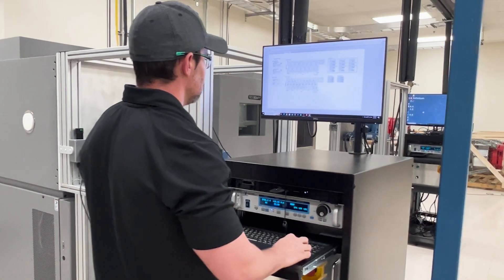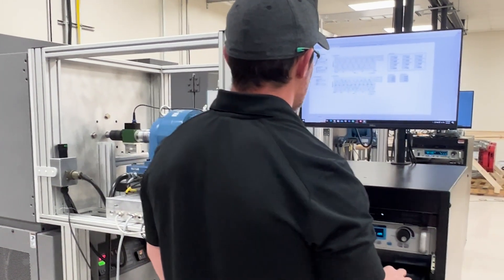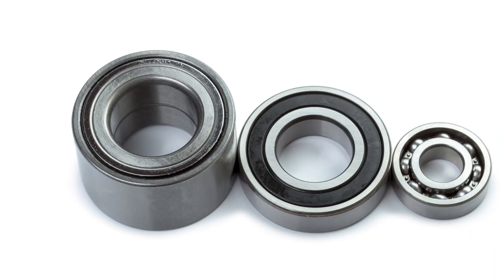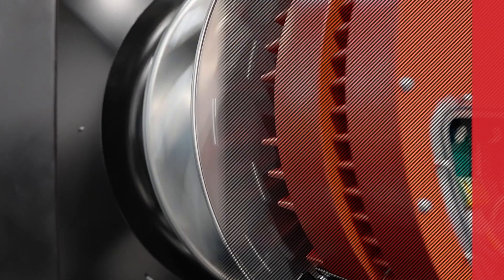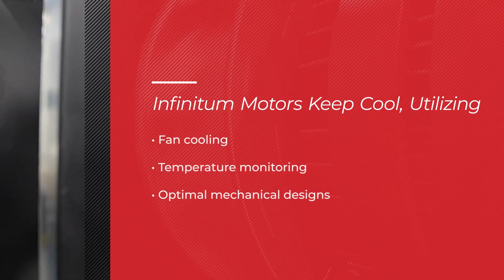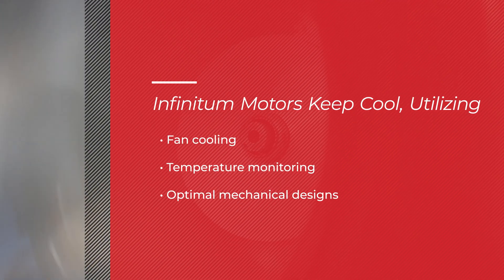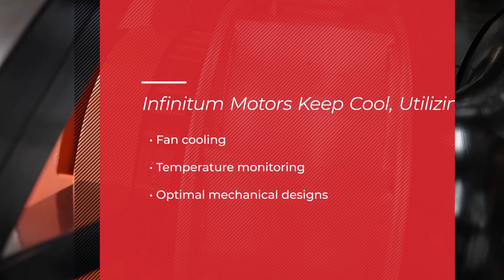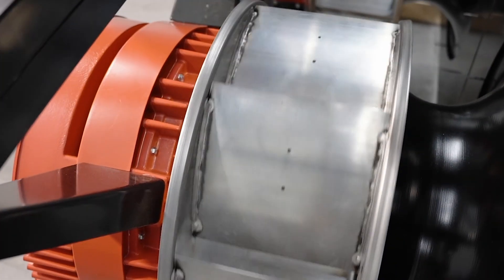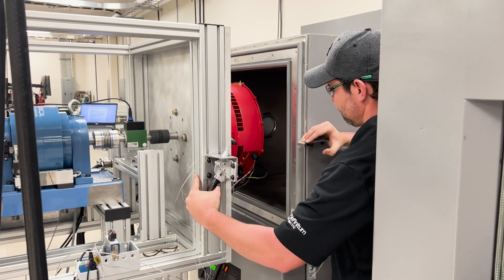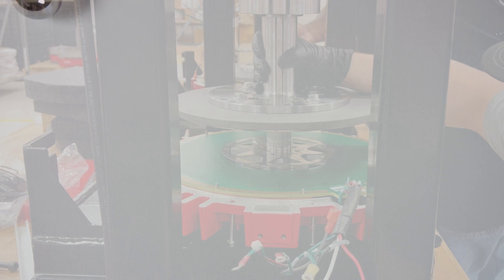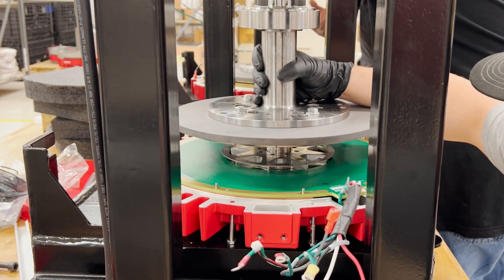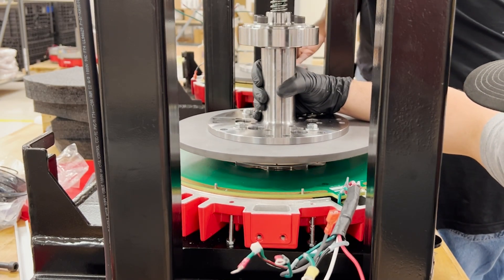Infinitum goes beyond to take preventive measures to mitigate bearing failure throughout the design process. Infinitum uses steel bearings and steel races on all of our motors. Infinitum motors are kept cool through fan cooling, continuously monitoring motor thermals to prevent over-temperature conditions, and optimal mechanical designs to pull heat out of the motor. We design and select our motor bearings with success in mind, using a hybrid 6200 series steel bearing or equivalent. We utilize grounding rings and shaft brushes to eliminate shaft voltages that would damage bearings.